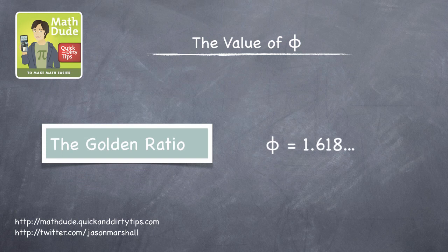But phi doesn't equal exactly 1.618. It's what's called an irrational number, the most famous of which is pi.